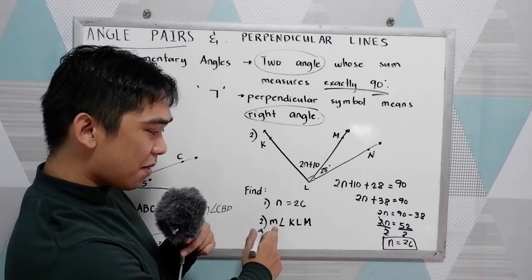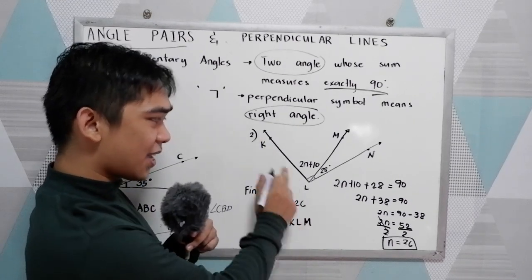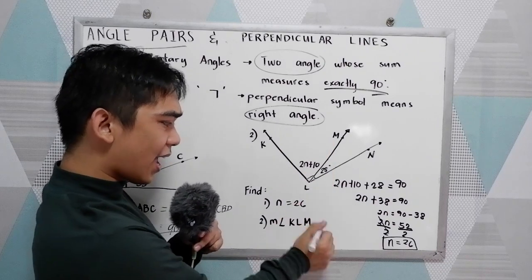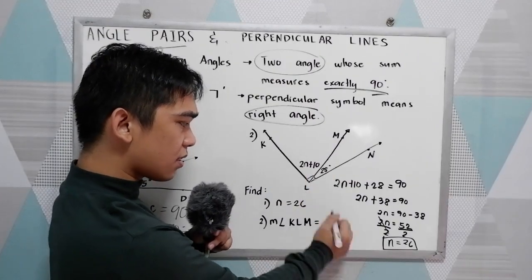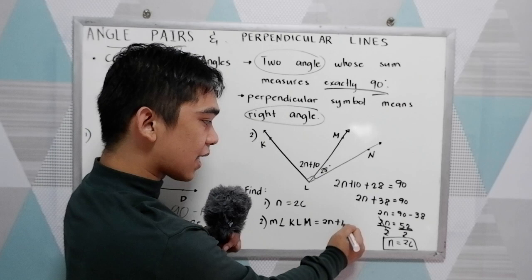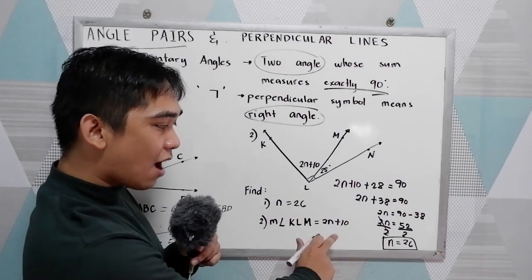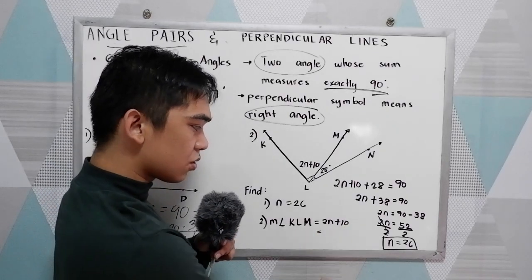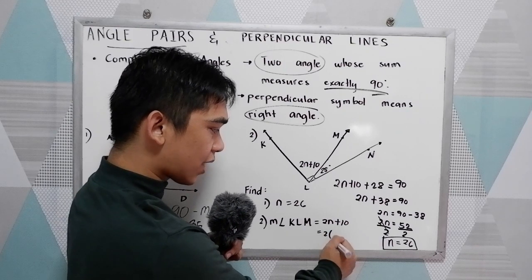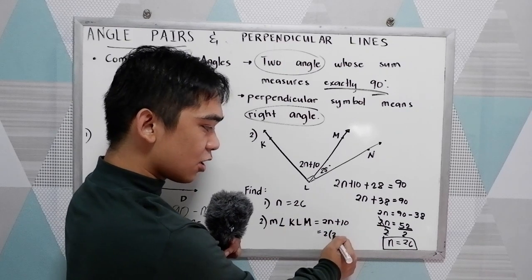Now, we need to get the measure of angle KLM. We know that KLM equals 2N plus 10. Since we have the value of N, just substitute.